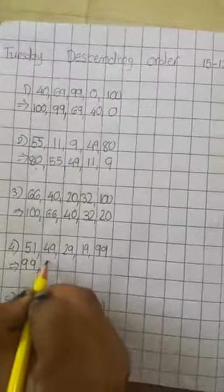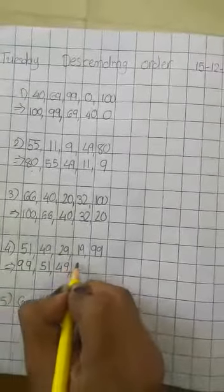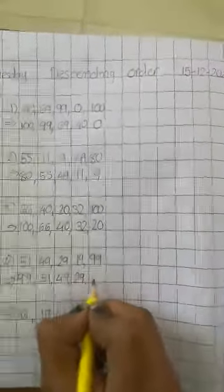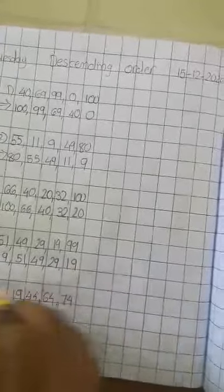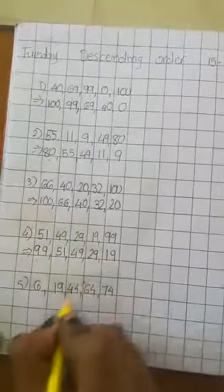99 before? 51. 51 before? 49. 49 before? 29. 29 before? 19. 99 is bigger number and 19 is small number.